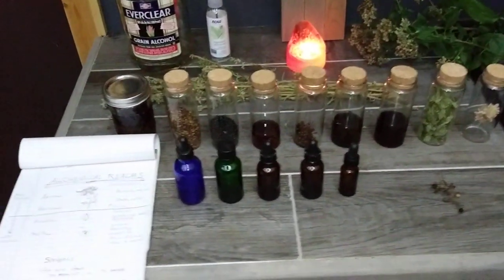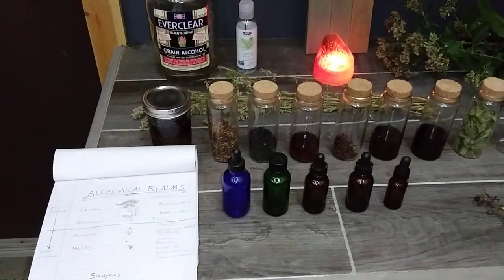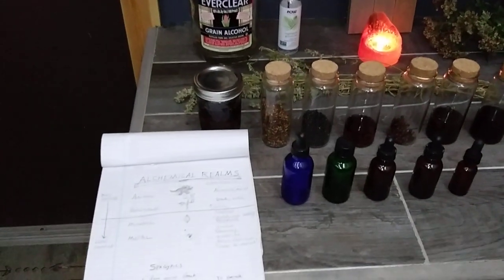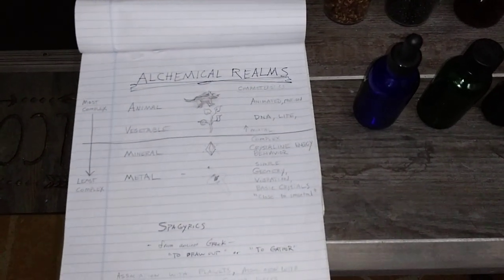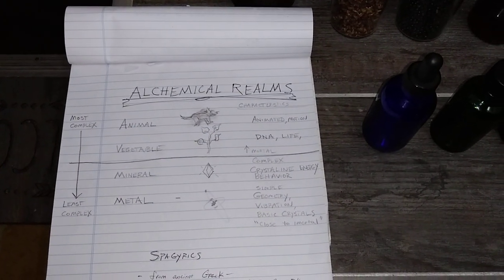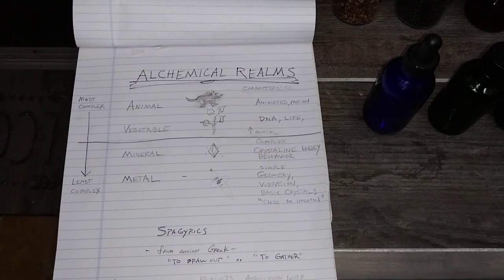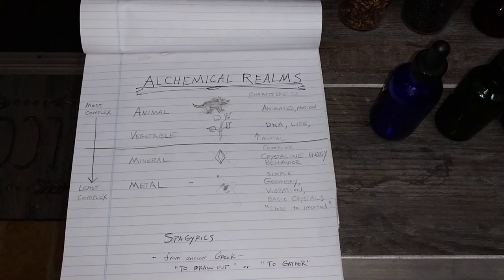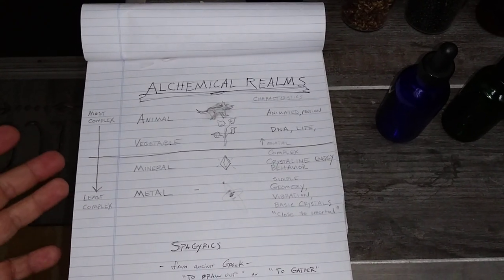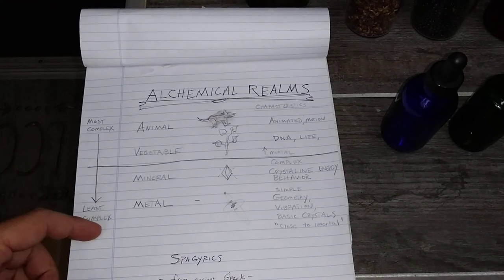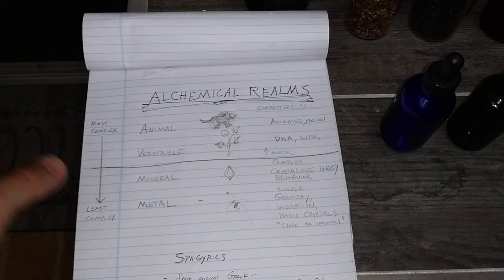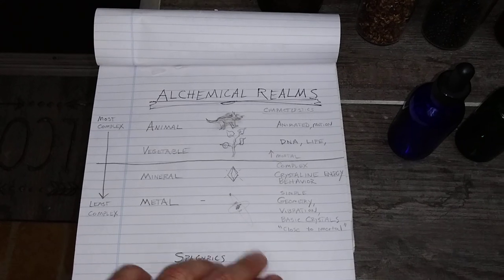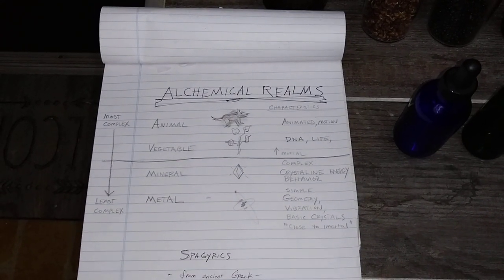First let's discuss the idea of spagyrics and the alchemical realms. I heard about the alchemical realms from a fellow named Avery Hopkins, who has some great videos on YouTube — Chimia Arts. In the alchemical realms, all of existence is categorized from least complex to most complex. At the bottom you have metals, just a simple atomic geometry, and this is where you get the most immortal of substances.